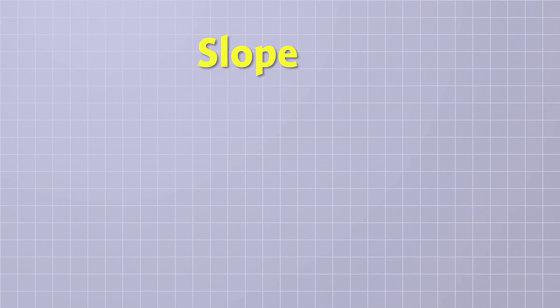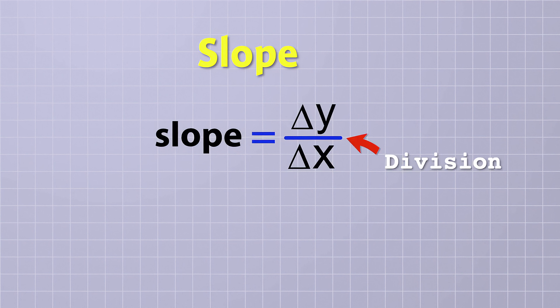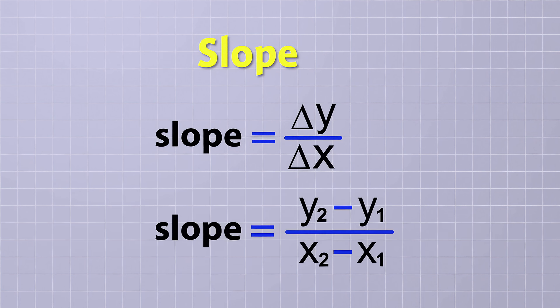The equation for the slope of a line looks like this. Slope equals delta y over delta x. Remember that the fraction line means division, so delta y over delta x is the same as delta y divided by delta x. You might also see the slope equation written in expanded form like this. The only difference is that the delta x and delta y have been written out to show the subtractions you need to do to get those values from the coordinates. Either way you want to write it is fine.